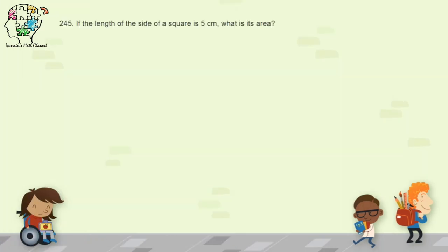Question 245: if the length of the side of a square is 5 centimeters, what is its area? The area is 25 square centimeters. Remember to write square centimeters as the unit.